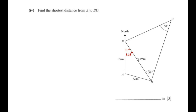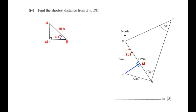Find the shortest distance from A to BD. The shortest distance is always the perpendicular distance. Angle ABD = 31.6 degrees from the previous part. We draw a perpendicular from A to BD, calling the foot M, and consider right-angled triangle AMB, right-angled at M. AB = 85 meters and angle B = 31.6 degrees.